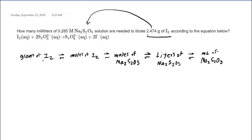And here is that roadmap. We're going to begin with the grams of iodine and convert that into the moles of iodine. And to convert grams of a substance into its corresponding number of moles, we'll be using the molar mass.